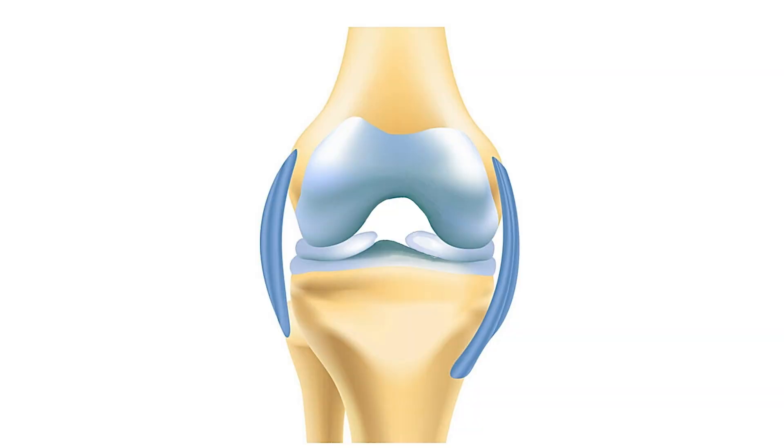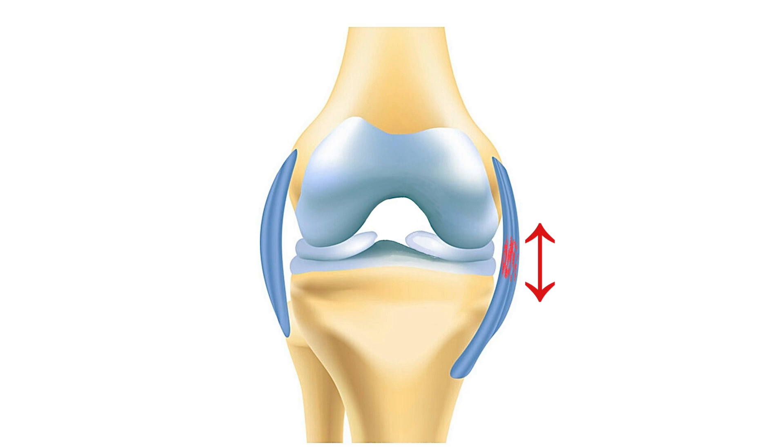Ligaments are tough bands of tightly packed collagen fibres which essentially act like strong ropes that support and strengthen the joints. Without collateral ligaments, hinge joints would be wobbly and unstable. But if we excessively rotate — basically twist the joint — or impose an aggressive sidewards force, then we can overwhelm these ligaments and essentially stretch or tear some of their collagen fibres. And that's exactly what a joint sprain is: a stretching injury to a collateral ligament.